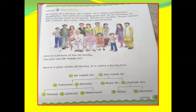Mr. Habib Ali and Mrs. Habib Ali have one daughter and one son. Raza Ali and Zainab Ali have two kids, Akbar and Mumtaz. These are the grandsons — grandson and granddaughter — of Mr. Habib Ali. Now look at Tahmina. She is the daughter of Mr. Habib Ali and Mrs. Habib Ali. She has three kids: Ahmed, Zehra, and Mahmood. So this is the family tree of Mr. Habib Ali.